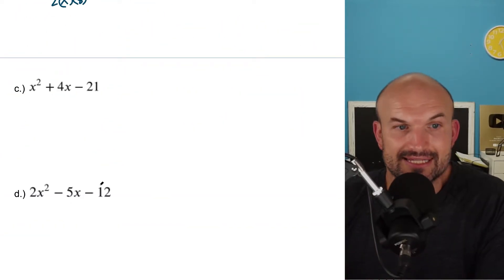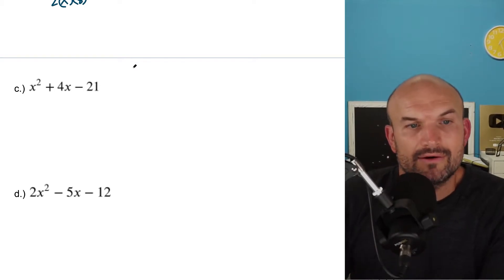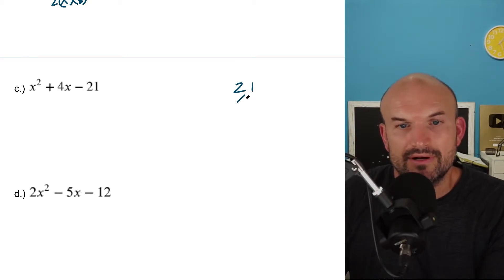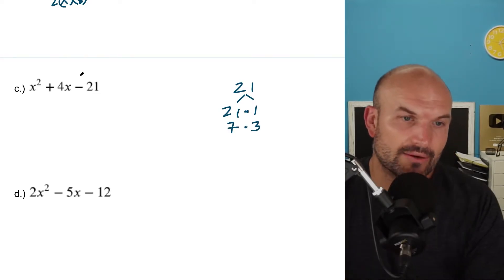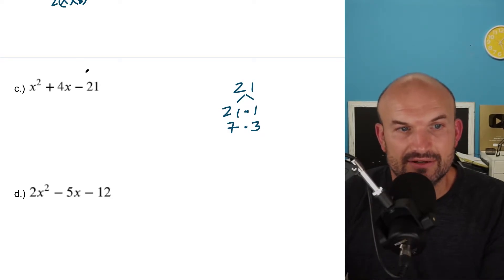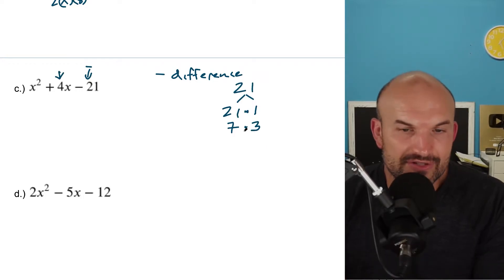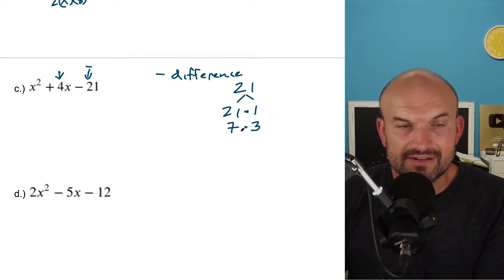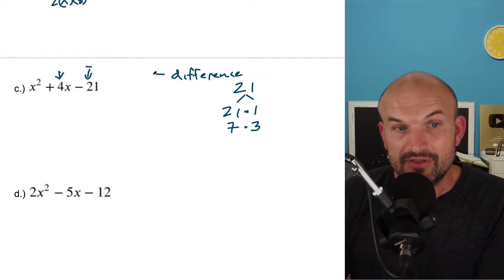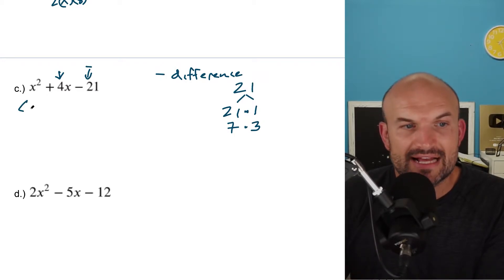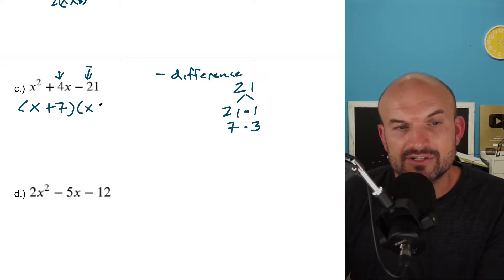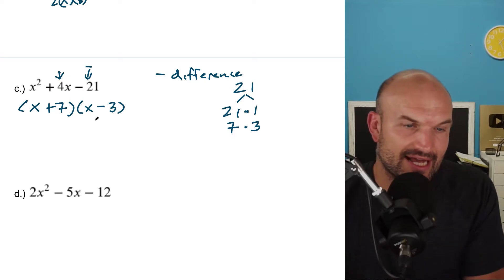Now in the next one, notice that my last term is not a square number. So what I'm going to do is basically say: what two numbers multiply to give me 21? You have 21 times one and seven times three. Now whenever the last number is negative, you're going to look at the difference. Negative means difference — so look at your factors and ask which of these factors have a difference of your middle term, which is four. Obviously seven and three have a difference of four. Since they have a positive difference, my seven has to be positive and my three has to be negative, because one of them has to be negative to make negative 21. Since the difference is positive, the larger of the two factors is going to be your positive factor. So the factored form is x plus seven times x minus three.